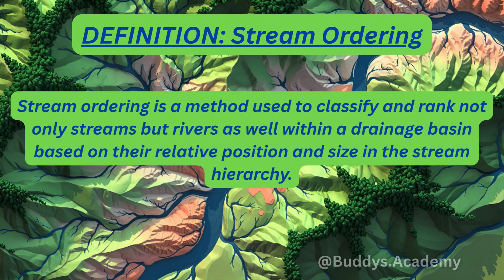Hey there guys, Buddy here. So let's talk about stream ordering. Stream ordering is a method used to classify and rank not only streams but rivers as well within a drainage basin, based on their relative position and size in the stream hierarchy. Basically, it's going to help geographers understand the structure and complexity of a drainage system.